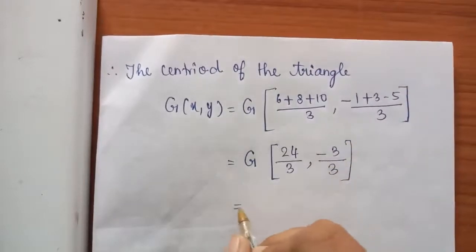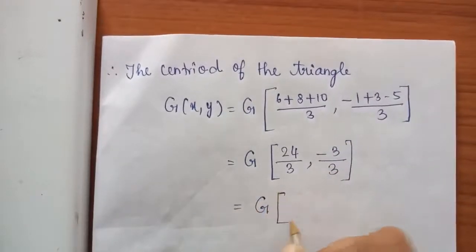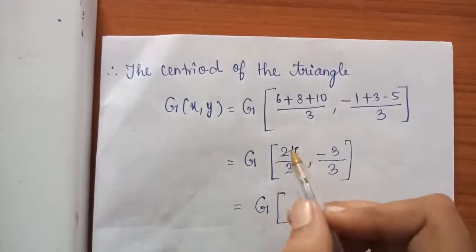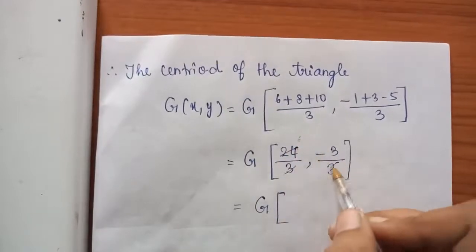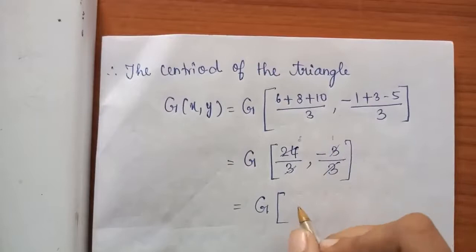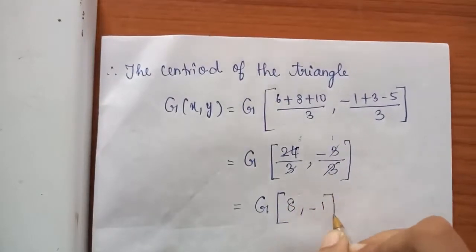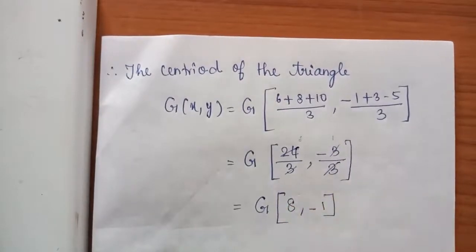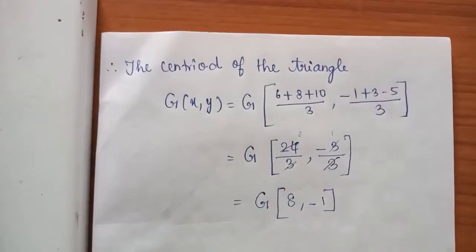24 divided by 3 is 8, and -3 divided by 3 is -1. So the answer is G(8, -1). Therefore the centroid of the triangle is (8, -1).